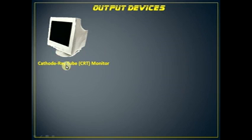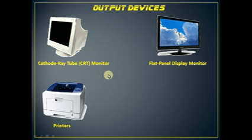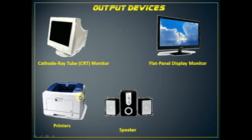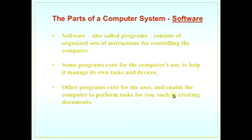Now let's see the output devices. Output devices include cathode ray tube (CRT) monitors, flat panel display monitors, printers, speakers, and headphones. These are the output devices.